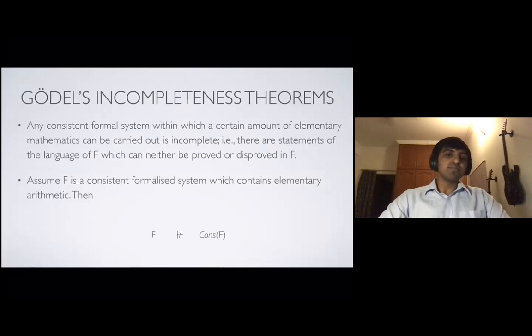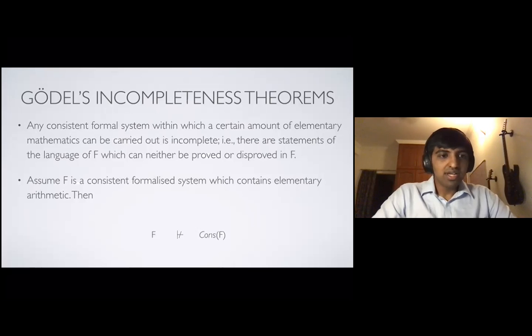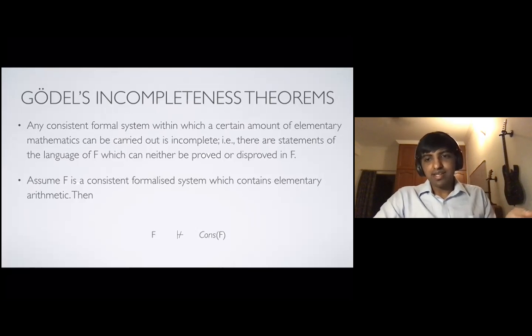But Gödel's incompleteness theorems broke that dream of a lot of people. And so here, I'd like to first read them out. Any consistent formal system within which a certain amount of elementary mathematics can be carried out is incomplete. That is, there are statements of language of F, which can neither be proved or disproved in F. So this is basically saying that if you take an axiom set, and you start logically deducing theorems from that, there's always going to be a statement that you cannot prove within that system.